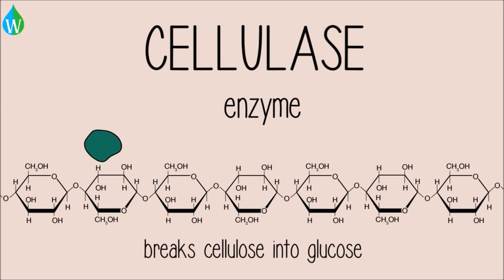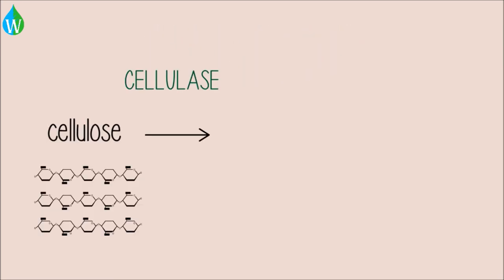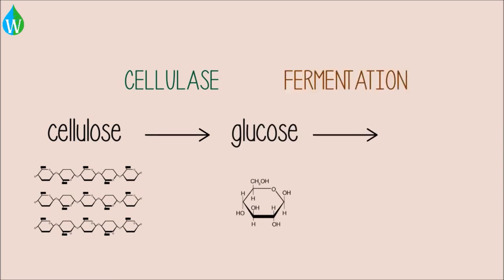Cellulase is the enzyme that breaks cellulose apart into its glucose monomers. Currently, the industrial usage of cellulase is to break down cellulose into glucose. The glucose obtained can then be fermented by certain bacteria to produce ethanol, which can then be used as a biofuel.